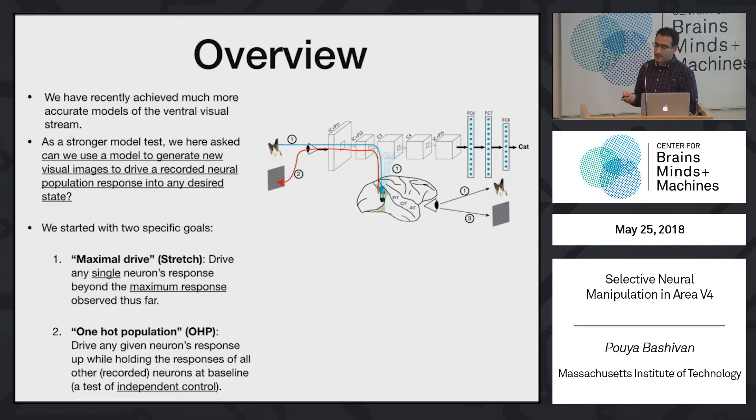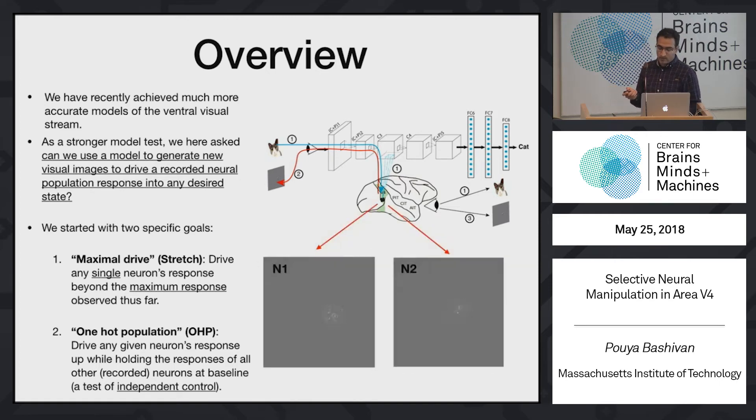And the last step is basically after we finish synthesizing images, we show this to the monkeys, and we record again responses of these neurons to these synthetic images. So the procedure, we do it for every neuron. We go ahead and use the gradients that we get from this model to generate different images. As you can see, these are the masks for receptive fields of a specific neuron, and we're changing the pixels within this receptive field in order to maximize the predicted response of individual neurons, in this case, neuron one, neuron two, example ones.